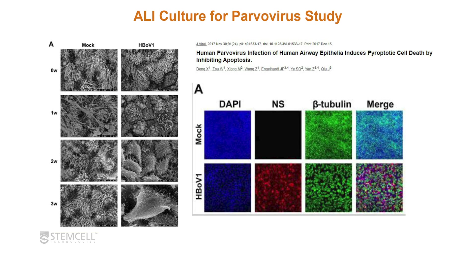Other studies have used ALI culture for investigation of parvovirus. In this study, bronchial epithelial cells were grown at air liquid interface and infected with HBoV1. Through TEM images, you can see that over several weeks of viral infection, there is a loss of cilia and the cells become much larger, which is an indication of cell death. The researchers are investigating pyroptotic cell death caused by this virus, as opposed to apoptosis or necrosis.